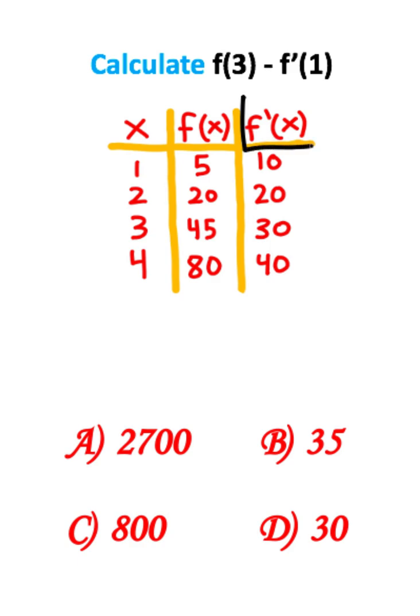We also have a function f prime of x, and the row for f prime of x is simply the derivative of f of x. And what we have on this far left row is the inputs for both of these functions.